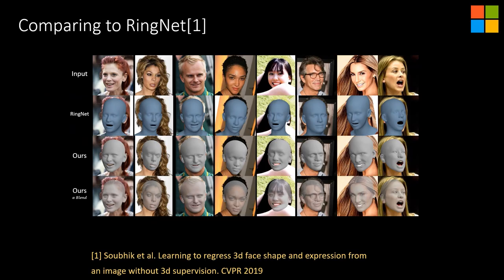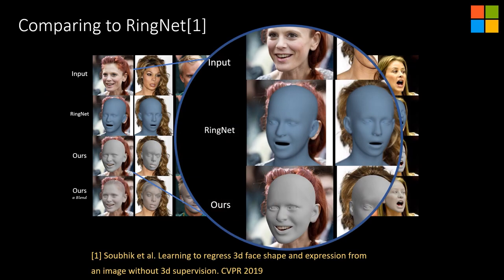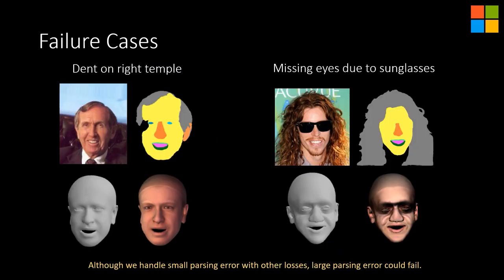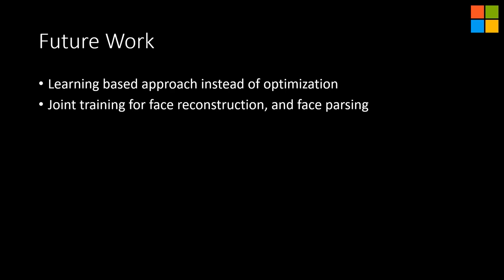Some qualitative results comparing to prior arts, RingNet and FML, also show that our framework recovers better face shape. Even if we aggregate over multiple attributes, big failures on face-parsing masks or heavy occlusion could still cause failures in recovering correct face shapes. In the future, we would like to experiment with learning-based methods as our framework is end-to-end and fully differentiable, and we would like to explore joint training for face reconstruction with face parsing. Thank you for watching our video. If you would like to know more about our work, we have more detailed information in our paper.